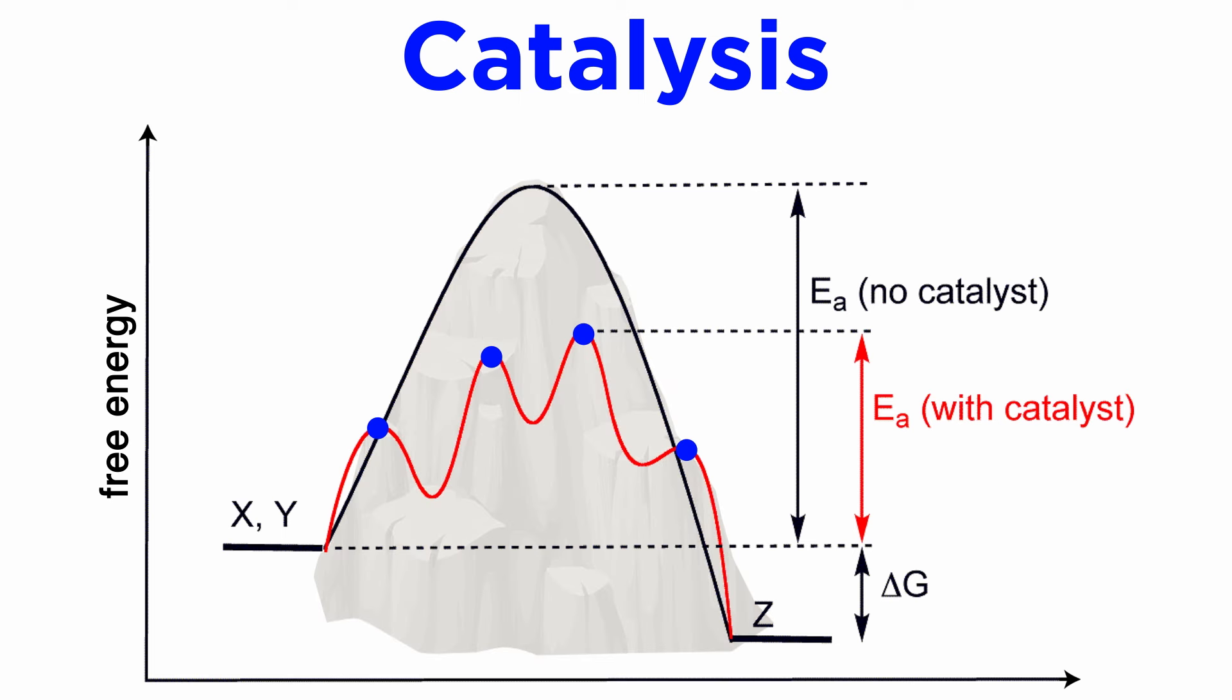As we can see, some of these smaller peaks on the secret route are higher than others, but all of them are shorter than the height of the whole mountain. And even if one step has a positive delta G, the overall delta G for the journey is negative, so the reaction is energetically feasible.